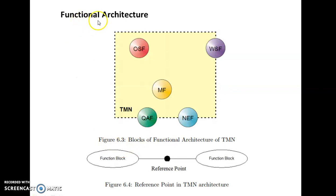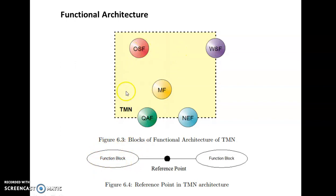The first part of TMN Architecture is the Functional Architecture. In Functional Architecture, the focus is on Functional Blocks which perform different management functions. There are five different types of Functional Blocks: OSF, MF, QAF, NEF, and WSF.